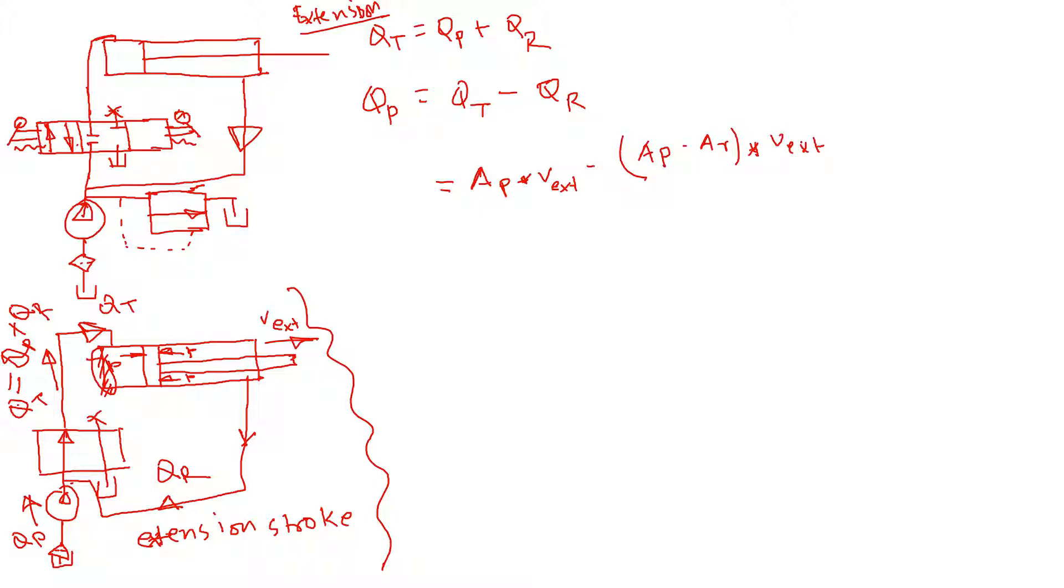To get the velocity of extension, if we just, so this one, this one cancel, I will have AR times velocity of extension. So that's QP. Now if we calculate velocity of extension, that's going to be equal to QP pump flow divided by the rod area. Now piston area is larger than the rod area.